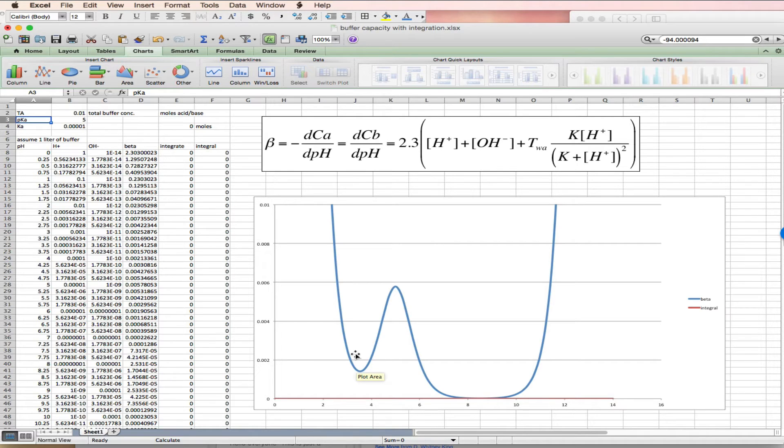Now the reason this plot is interesting is that the integral from any point on this plot to any other point is the amount of acid or base you need to change the pH. So if you're doing an experiment which is producing acid as a consequence of the experiment, and you want to buffer against that pH change,